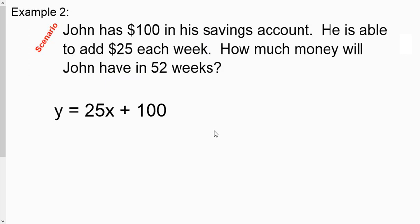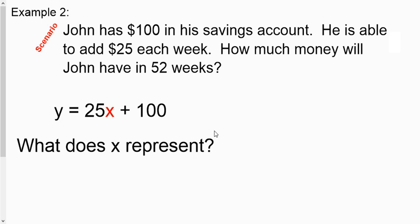When we take a look at the situation with John and his savings account, here's our function rule. And if we said, what does the X represent? Well, since that's tagged into our rate of change, that 25, go back to the story problem and take a look at it. It's $25.